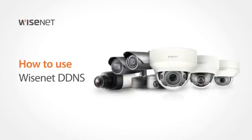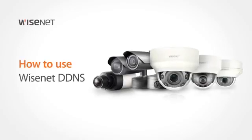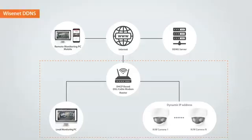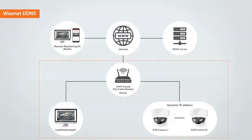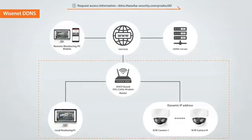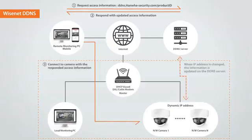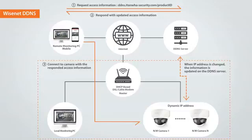Welcome! This video will show you how to use Wisenet DDNS. When a camera is using a dynamic IP address, it is often difficult to access the camera since users have to enter the updated IP address every time it changes. Wisenet DDNS is a service that converts the dynamic IP address of a camera into a DDNS URL so that users can easily access the camera when using an external remote PC or mobile.